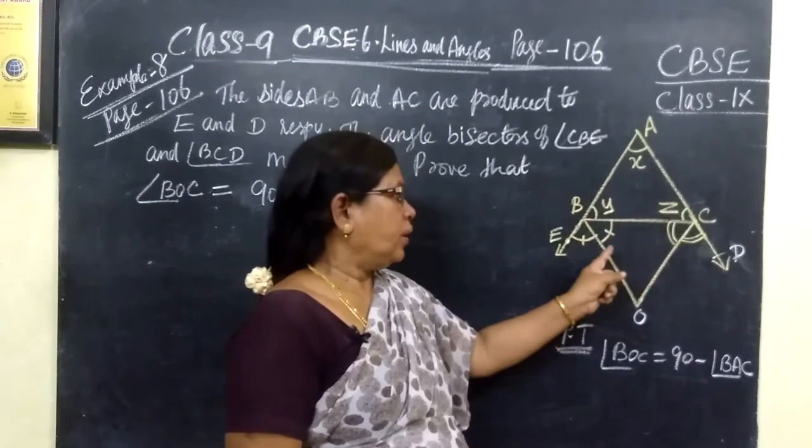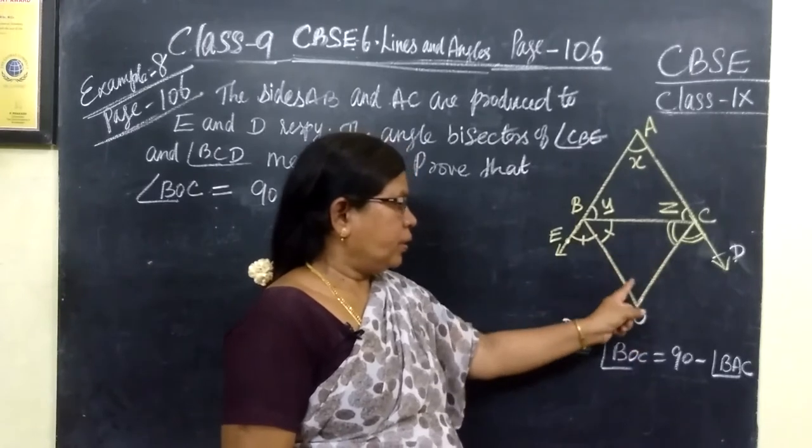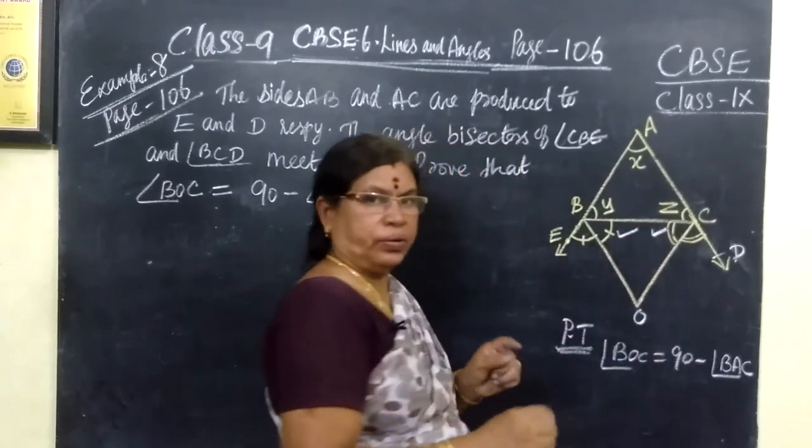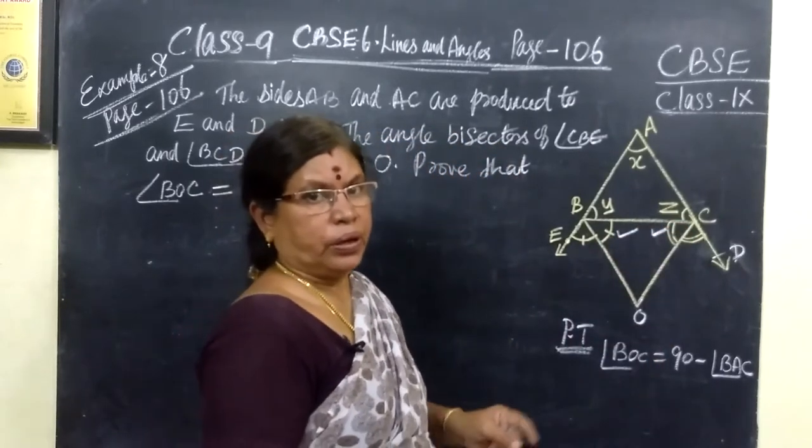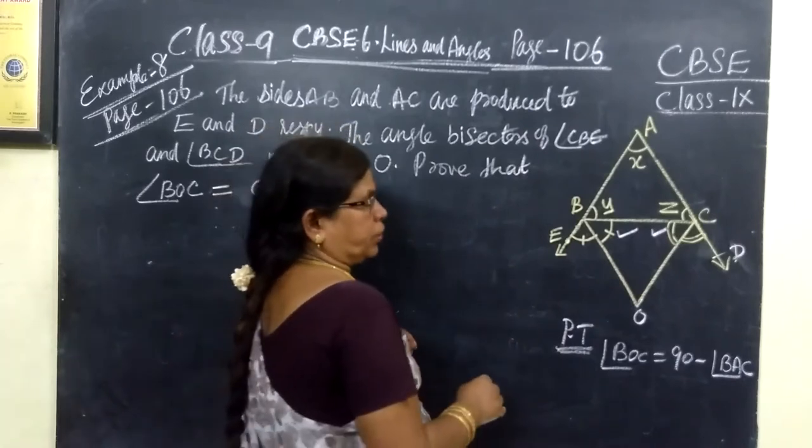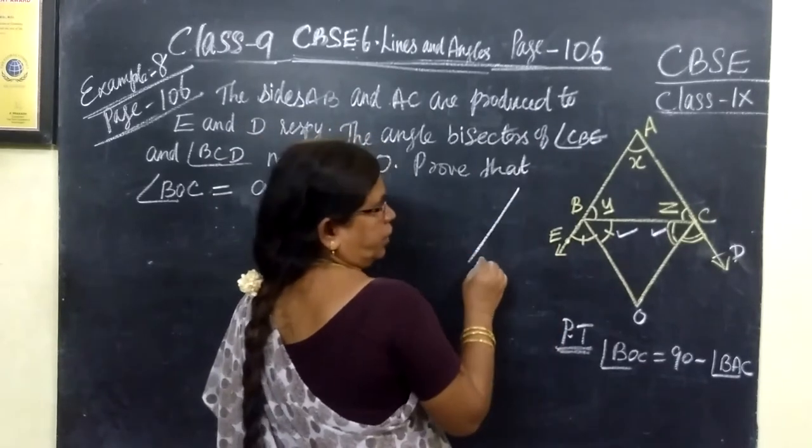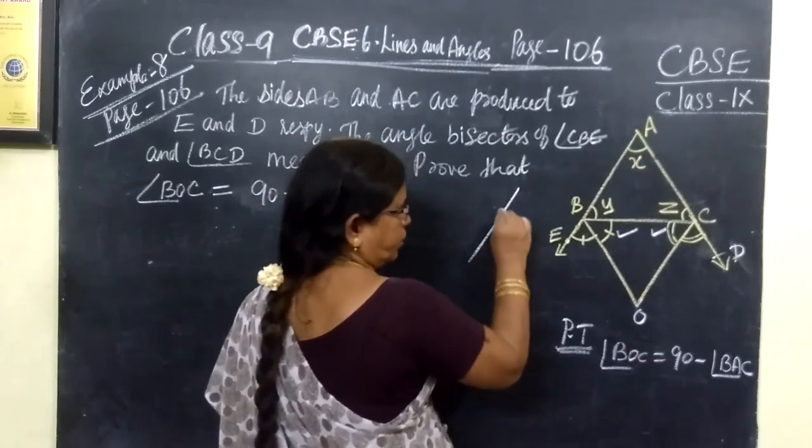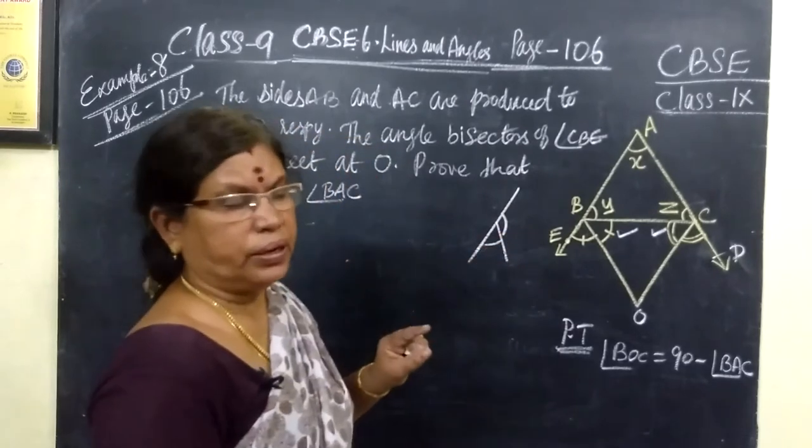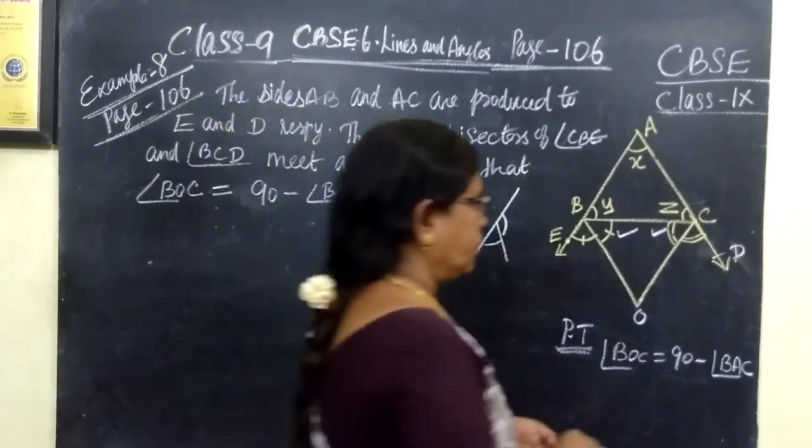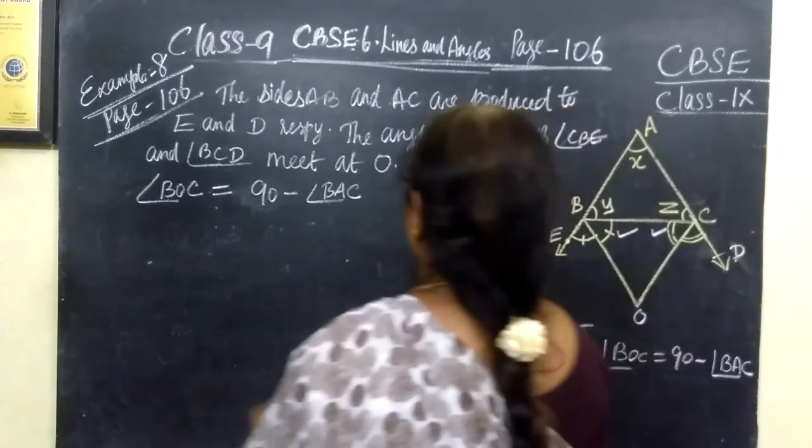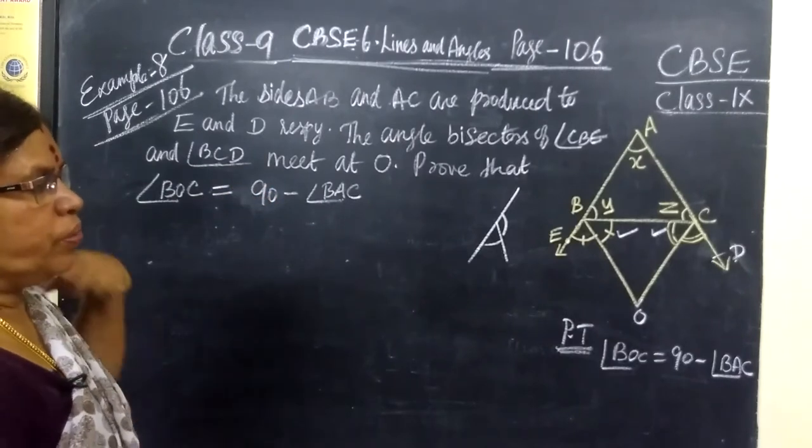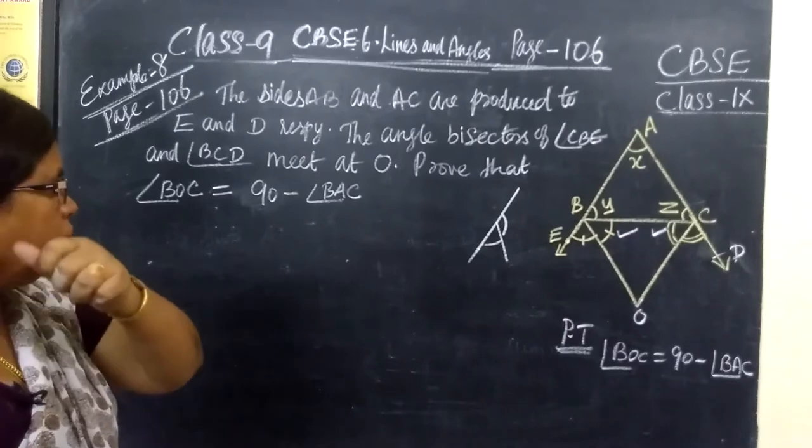You know one result. And in this triangle BOC, this angle BOC plus this angle plus this angle equal to 180 degree, so we can equate it or substitute it. And another property, you know, it is a straight line and a ray stands on it, means sum of the adjacent angles equal to 180 degree. So using all this concept, we are doing this problem.